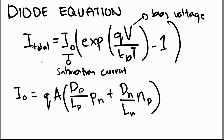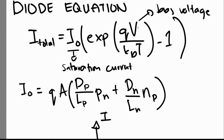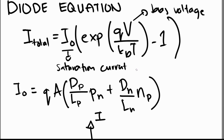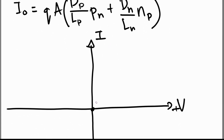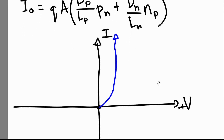If we graph the diode equation, we get a plot of current I versus voltage V. At zero voltage, the exponential term equals one, and one minus one gives zero current. In the forward bias region, as voltage increases, the current rises exponentially. Meanwhile, in the reverse bias condition, the exponential term becomes very small, so the expression approaches negative one, giving a current that approaches negative I₀.